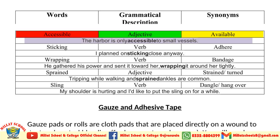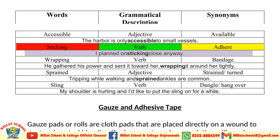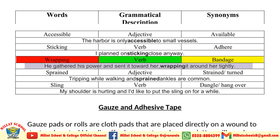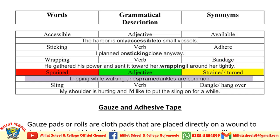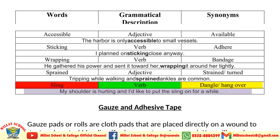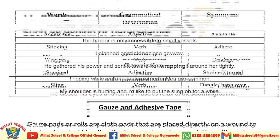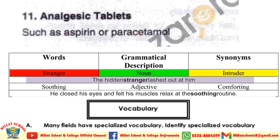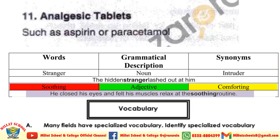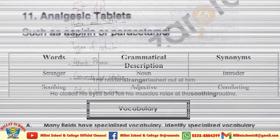Important words from this passage: 'Accessible' (adjective), synonym: 'available.' Example: 'The harbor is only accessible to small vessels.' 'Sticking' (verb), synonym: 'planned on sticking.' 'Wrapping' (noun), synonym: 'bandage.' Example: 'He gathered his power and sent it toward her, wrapping it around her tightly.' 'Sprained' (adjective), synonym: 'strained and turned.' Example: 'Tripping while walking and sprained ankles are common.' 'Sling' (noun), synonym: 'dangle or hang.' Example: 'My shoulder is hurting and I'd like to put the sling on for a while.' 'Soothing' (adjective), synonym: 'comforting.' Example: 'He closed his eyes and felt his muscles relax at the soothing routine.'